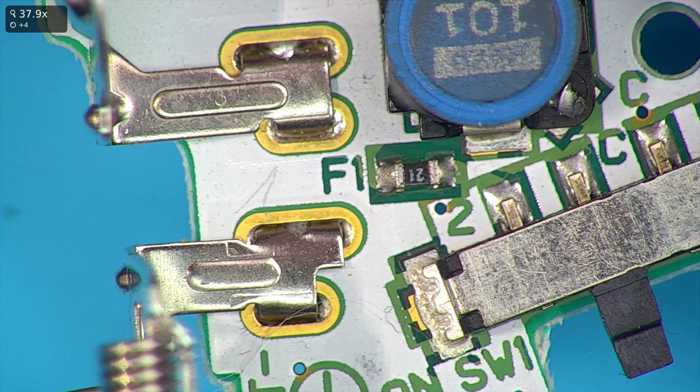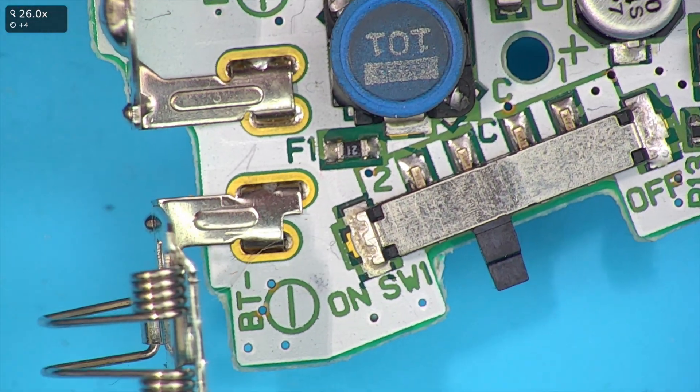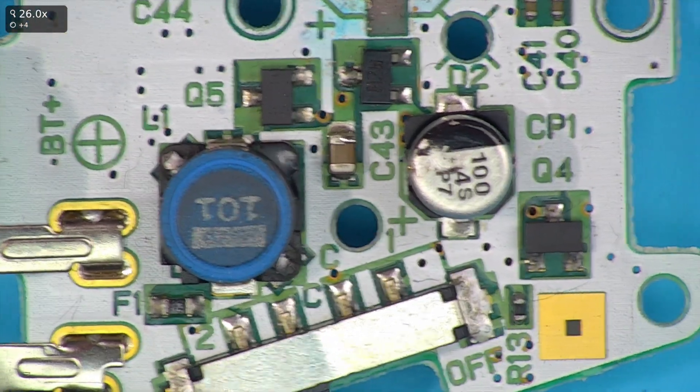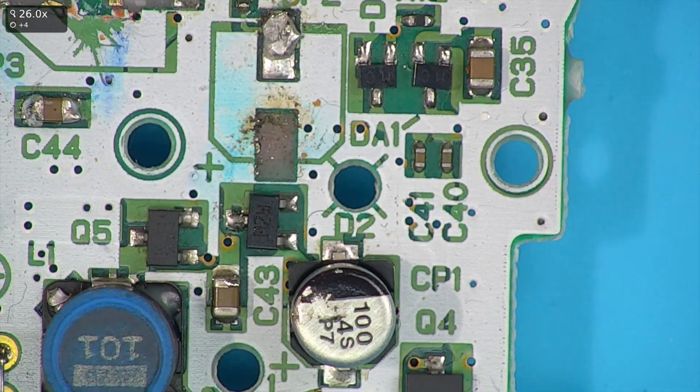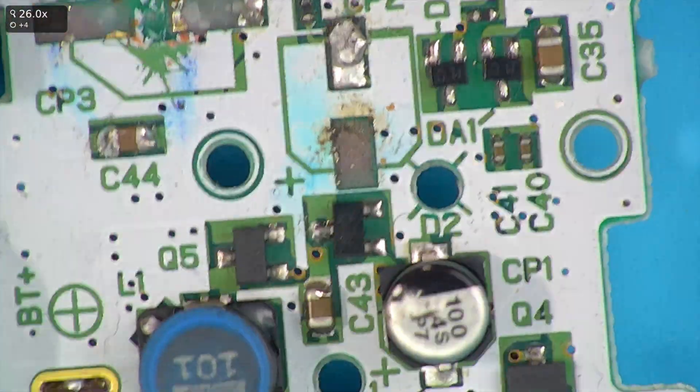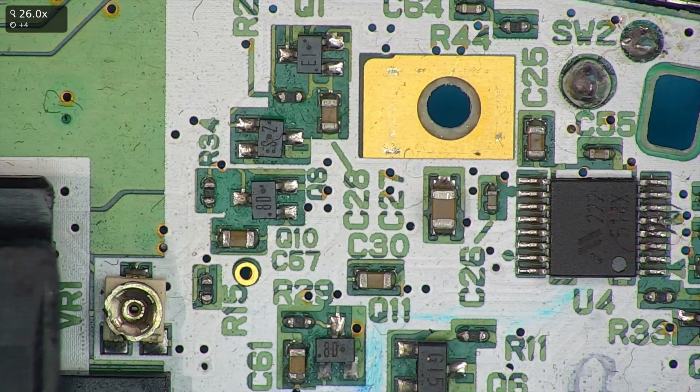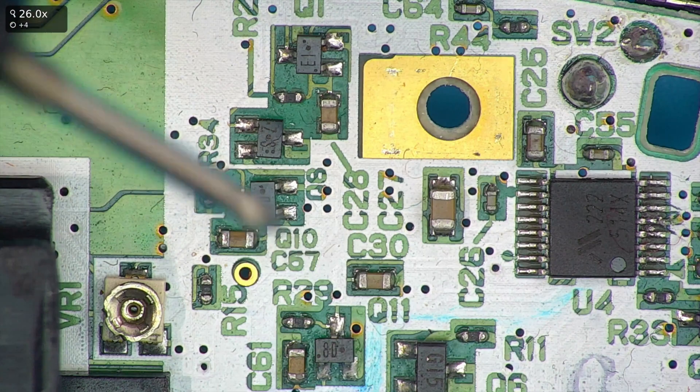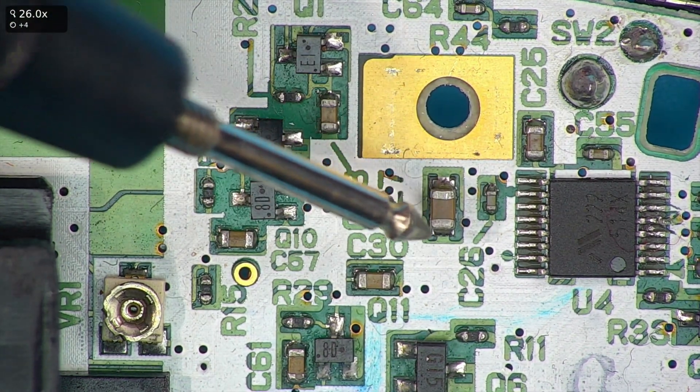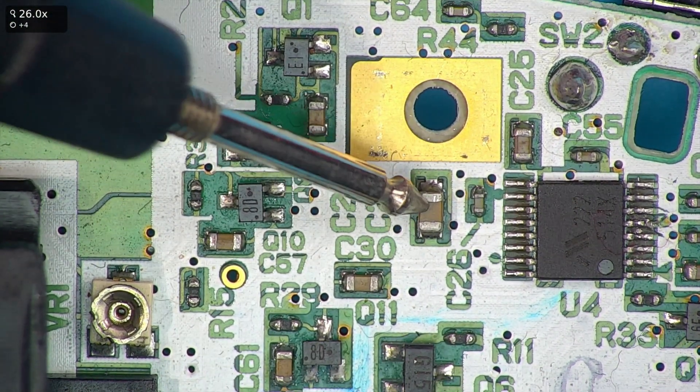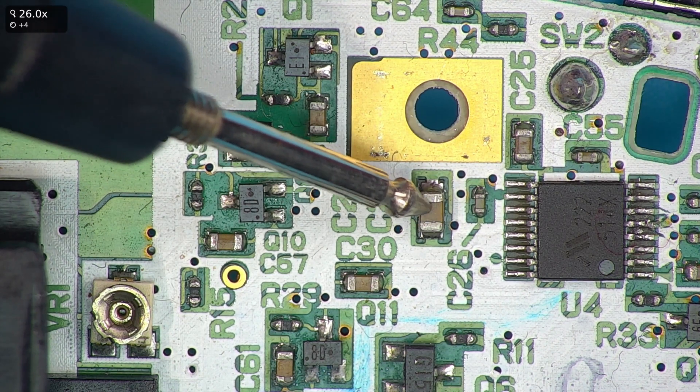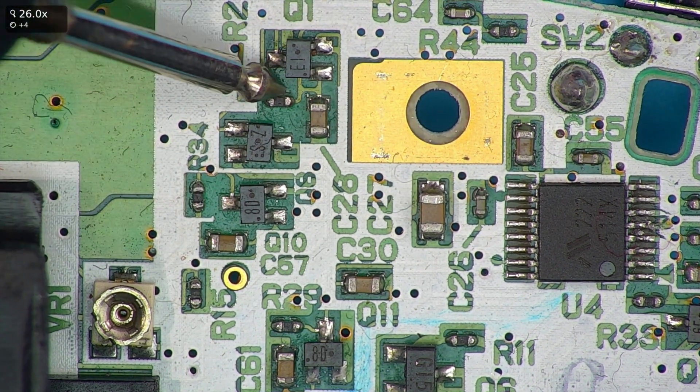So when you do voltage, you typically have your black wire being on the least negative side. But in terms of continuity and resistance, the leads don't matter which way around they are. They work both ways. So the first thing to do is identify the fuse. So in this case, here's the fuse, F1. You'll normally find that they're designated F for fuses. Capacitors are normally C, as you can see, C43, CP1. Diodes are normally D, hence DA1. Resistors are normally R.